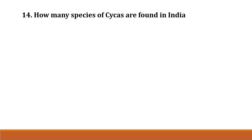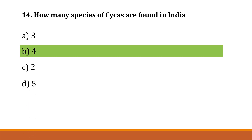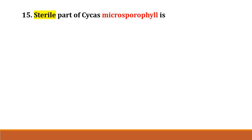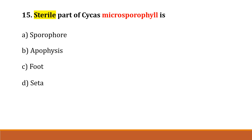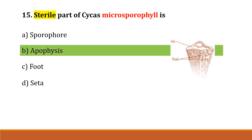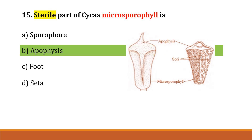Question number 14: How many species of Cycas are found in India? Option A: 3, Option B: 4, Option C: 2, Option D: 5. Correct answer is Option B, 4. Question number 15: The sterile part of Cycas microsporophyll is Option A: sporophore, Option B: apophysis, Option C: foot, Option D: citta. The correct answer is Option B, apophysis. This is the sterile part of the microsporophyll which is called apophysis.